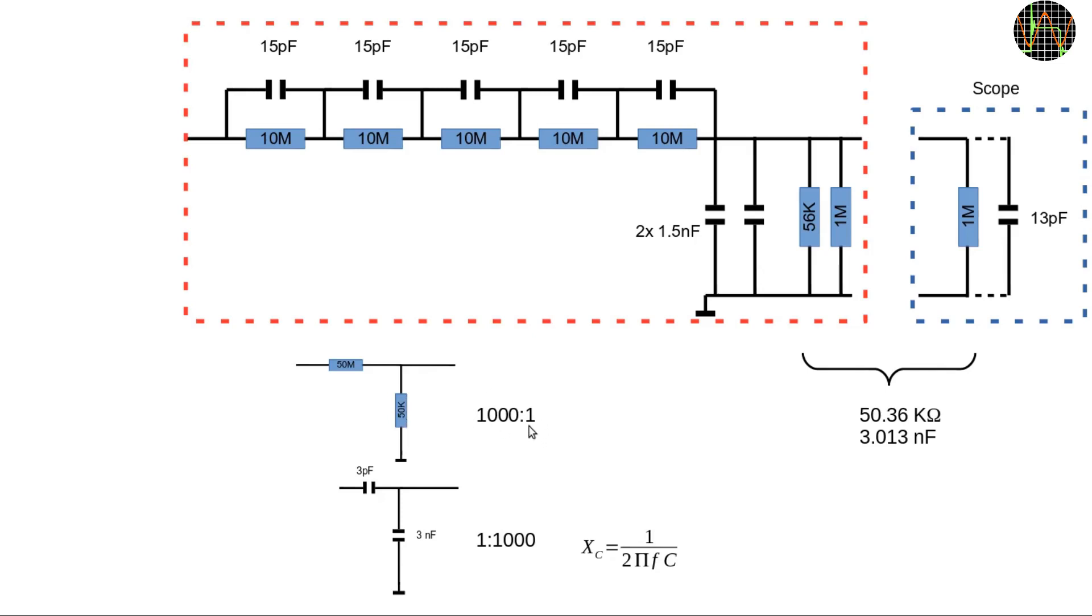Strictly speaking the value of 50MΩ is of course slightly too high. To be a true 1 to 1000 divider it needs to be 50MΩ minus 50kΩ or 49.95MΩ, but with real-world resistor tolerances that difference can be ignored.